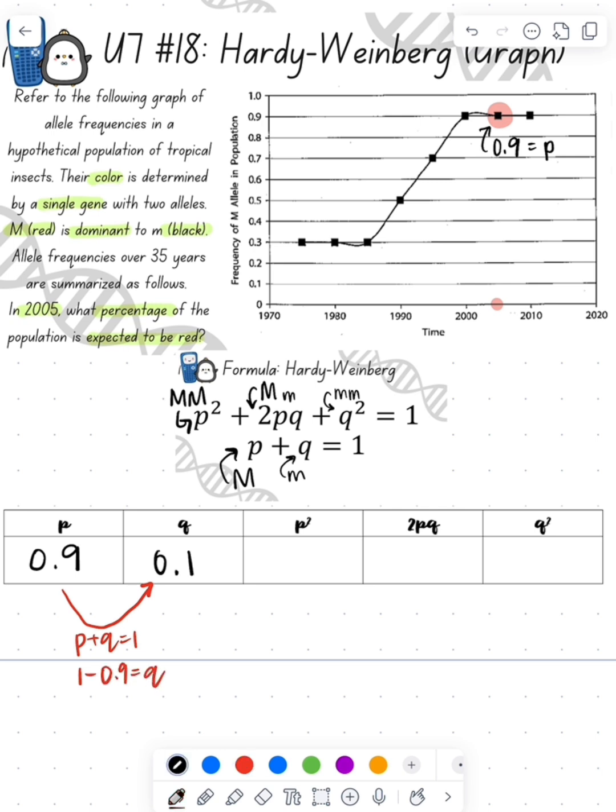Now that I know P, I can find P squared, so if I square that 0.9, that's going to give me 0.81. Then if I want to find my Q squared, I just square the Q value, so that's going to be 0.01 for my Q squared value.